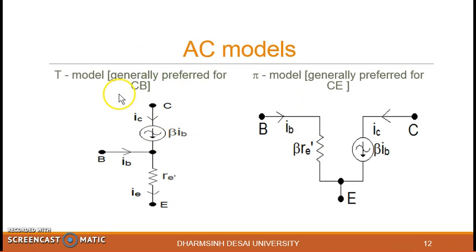So these are the main two models that are available T model or you say RE dash model, pi model that is nothing but R pi model. It looks like a pi that's why it is known as pi model. This is basically generally preferred when you go for common base because when you go for common base this will be grounded. The same way this is preferred for the CE configuration. You can use this also for CE configuration and this also for CB configuration but generally to make the analysis simple this is what they do.